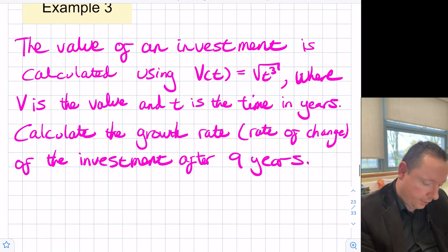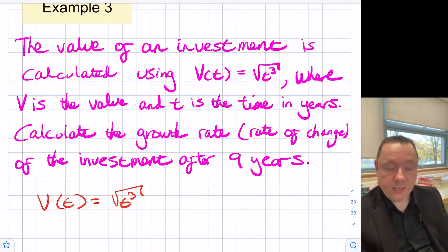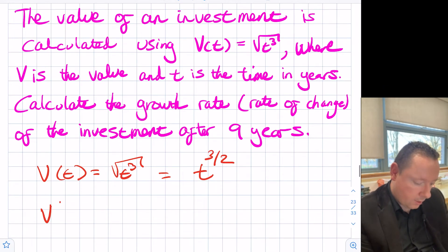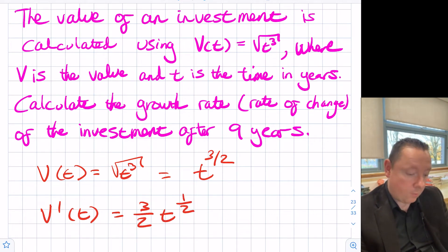So v of t is equal to the square root of t cubed. We need to get that ready to differentiate. So that means it's t to the power of three halves. So v dash is equal to three over two t to the half, taking away one. And we want that after nine years, so we can just substitute nine into this.